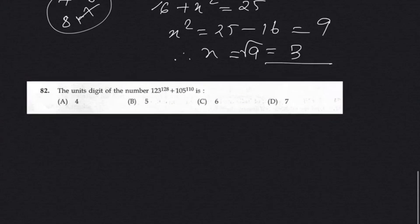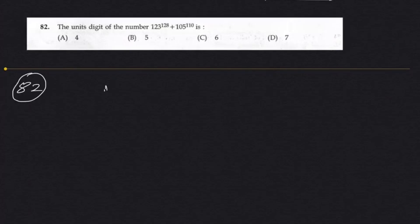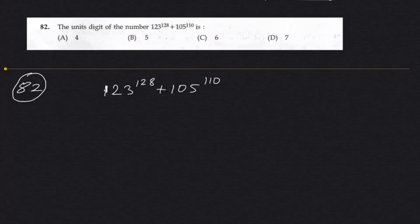Question 82. This question requires a lot of understanding about unit digits and their cyclical nature. This question looks very simple — they're simply asking the unit digit of 1-2-3 to the power 128 multiplied by another number to the power 105 and 110. We need to find the unit digits of these numbers added together.